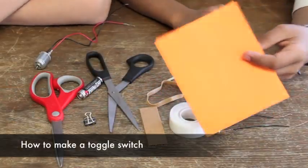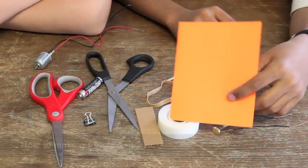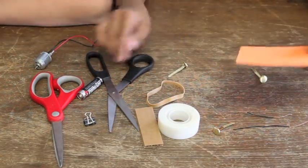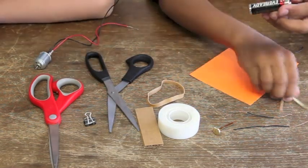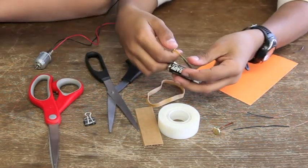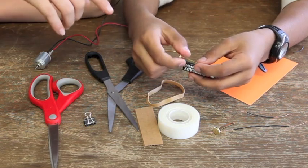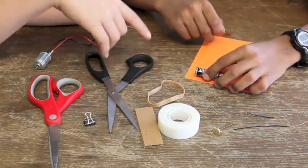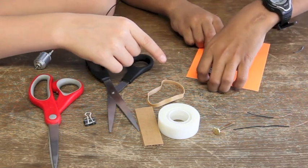Now we are going to show you how to make a toggle switch. First you take the cardstock, then you take a battery. This I think is going to be the back of the toggle switch. So you put the battery on one end of the cardstock.